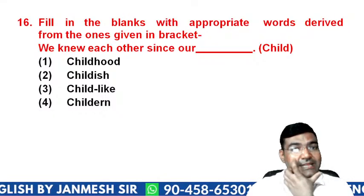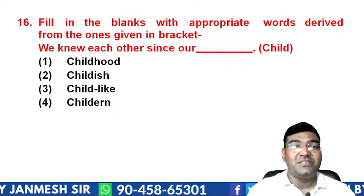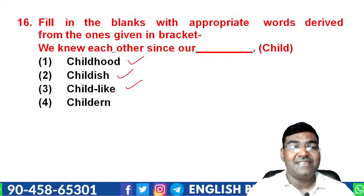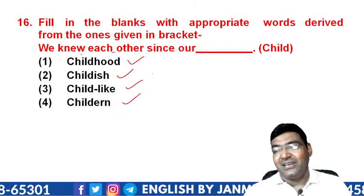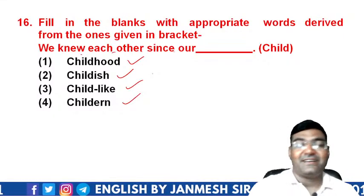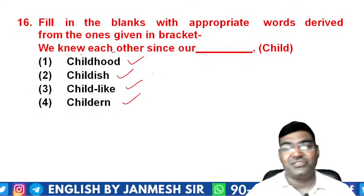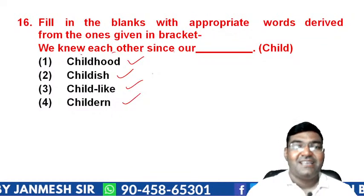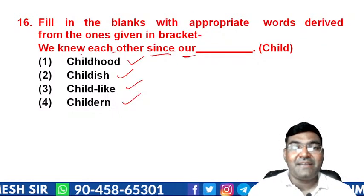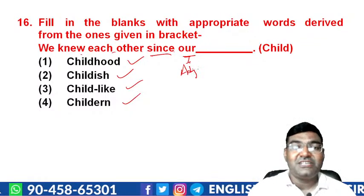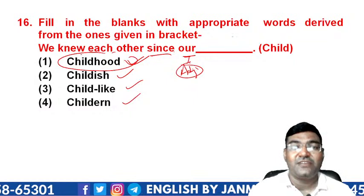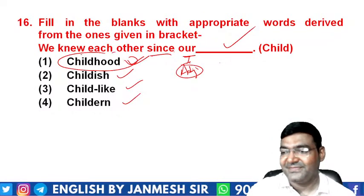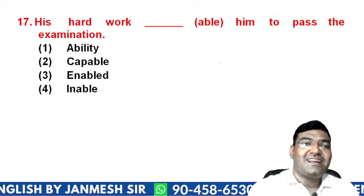Question 16: fill in the blank — 'We knew each other since our _____ (child).' Options are 'childhood', 'childish', 'childlike', or 'children'. Here 'our' is a possessive adjective, and after an adjective a noun should follow. 'Child' as a root gives us the noun 'childhood'. So 'childhood' is the correct answer — option A.